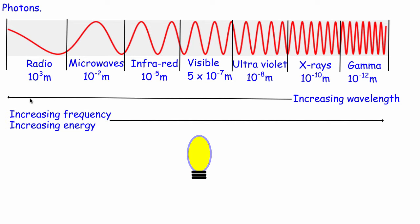A second characteristic we associate with waves is their frequency, defined as the number of waves that pass a certain point per second. For radio waves, because the peaks are spread out, the number of waves passing you per second is much smaller than for gamma rays. So as we move from radio waves up to gamma rays, the frequency increases.